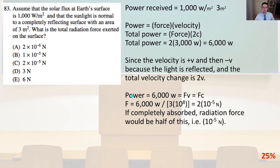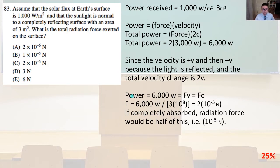Number 83. Assume that the solar flux at Earth's surface is 1,000 watts per meter squared, and that the sunlight is normal to a completely reflecting surface with an area of three meters squared. What is the total radiation force? The power received equals 1,000 watts per meter squared times 3 meters squared. Power equals force times velocity, so total power equals force times 2C, where total power equals 2 times 3,000 watts equals 6,000 watts.